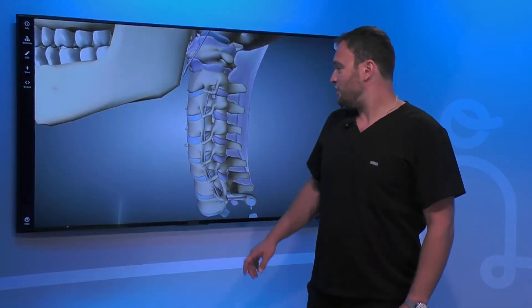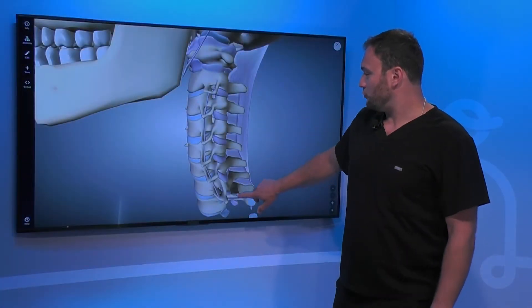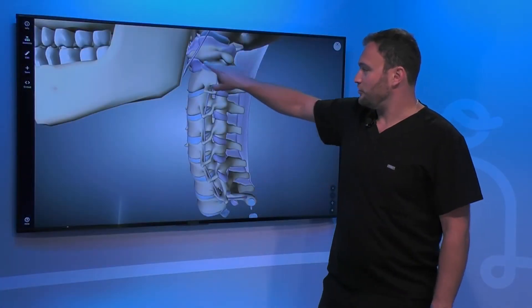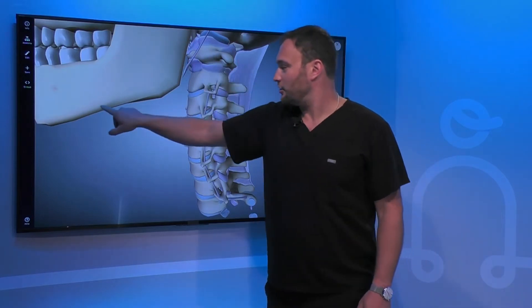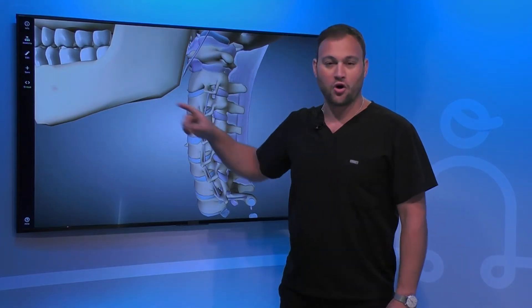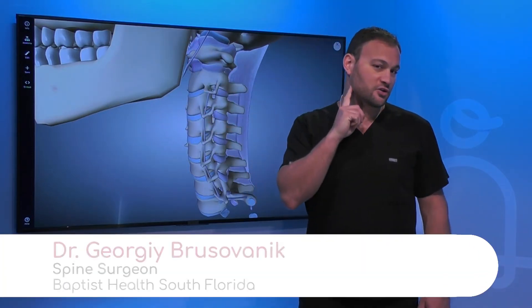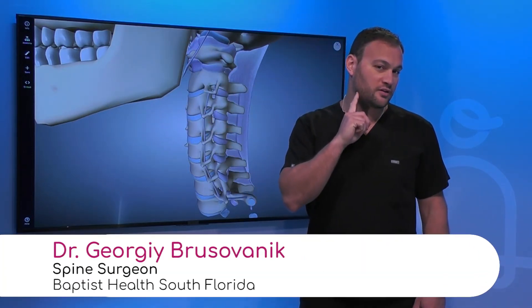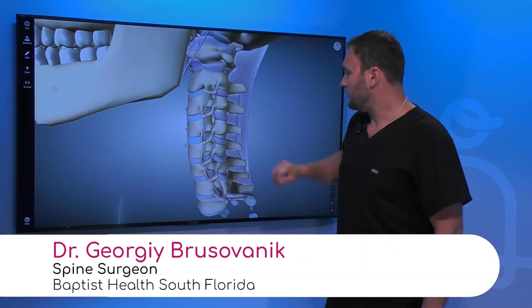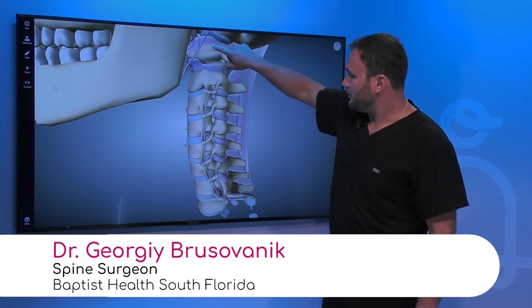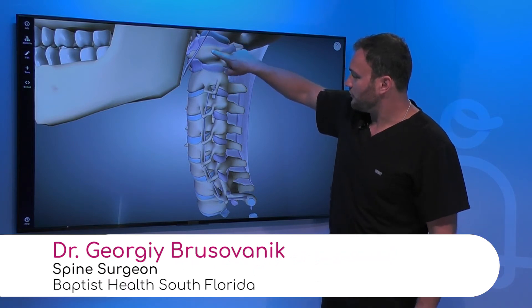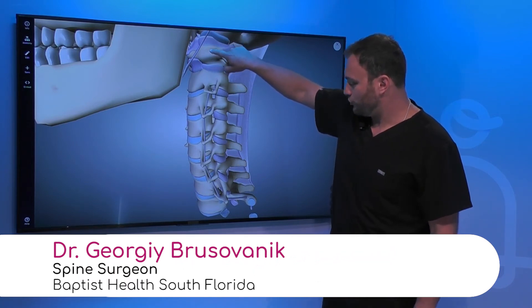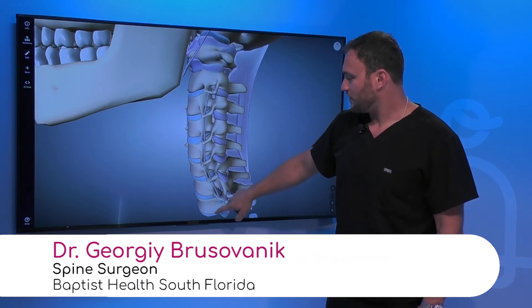So this is a side view of the human spine. You can see the angle of the jaw and that's the section of the jaw right there. These are the vertebrae starting from the first all the way down to the seventh.